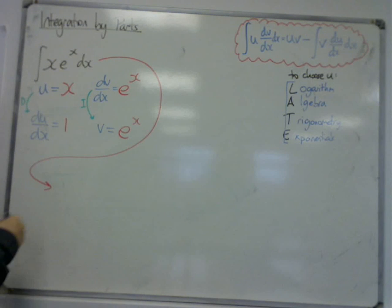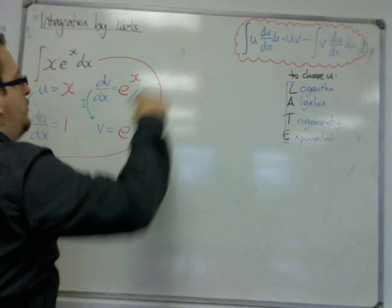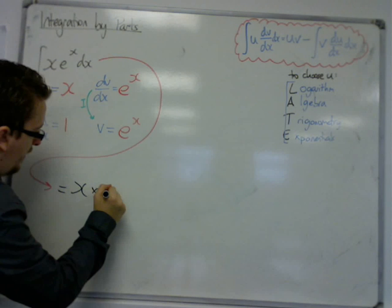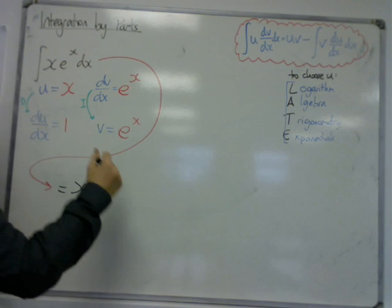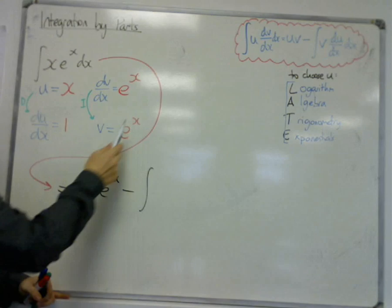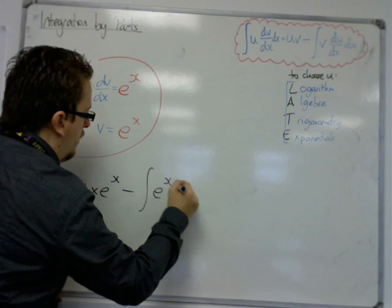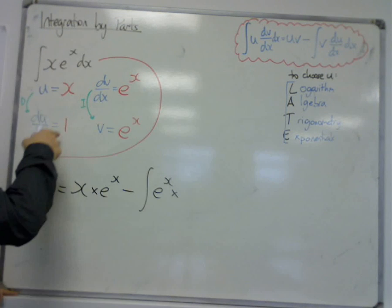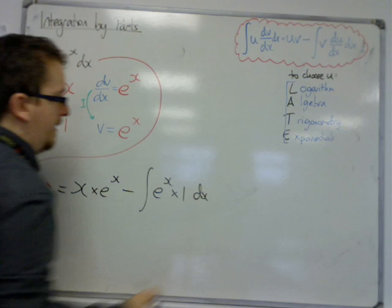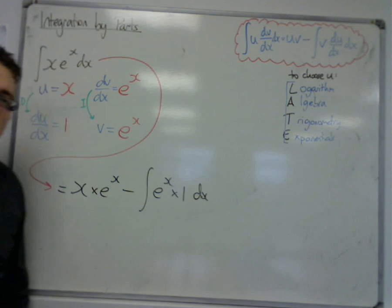First of all, we have u times v. So u times v, we have x times e^x. And then we have, take away the integral of v, that's e^x, times by du/dx, which was 1. And we've got that dx on the end.